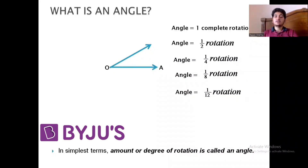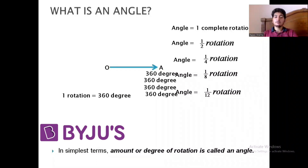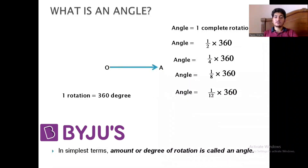The problem with this notation is that we are writing fractional values like half, one-fourth, one-eighth, and one-twelfth — these are complicated to handle. We want to transform these into whole numbers. So we say: if one complete rotation equals 360 degrees, then replacing one rotation with 360 degrees gives us whole numbers. Half of 360 is 180, one-fourth is 90, one-eighth is 45, and one-twelfth is 30 degrees. Why one rotation equals 360 degrees has a complete backstory, but due to time limitations we are skipping that here.